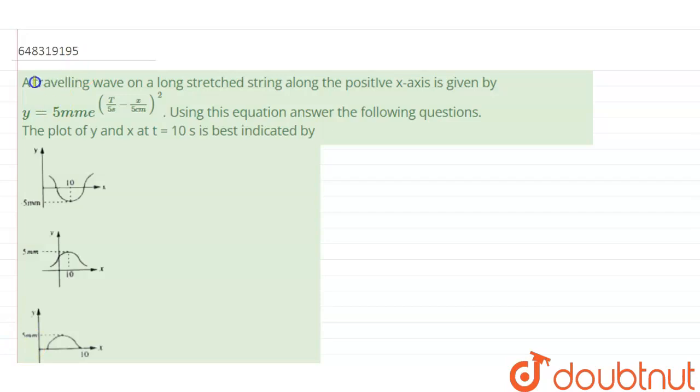traveling wave on a long stretched string along the positive x-axis is given by y equal to 5mm e power t by 5 seconds minus x divided by 5 centimeters squared. Using this equation answer the following question: the plot of y and x at t equal to 0 is best indicated by.